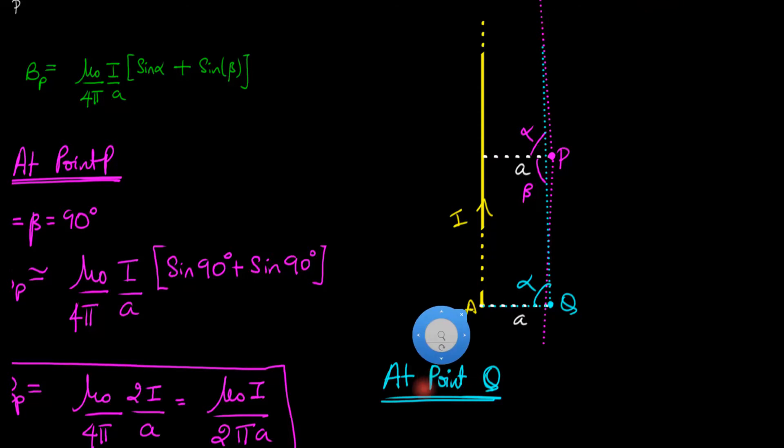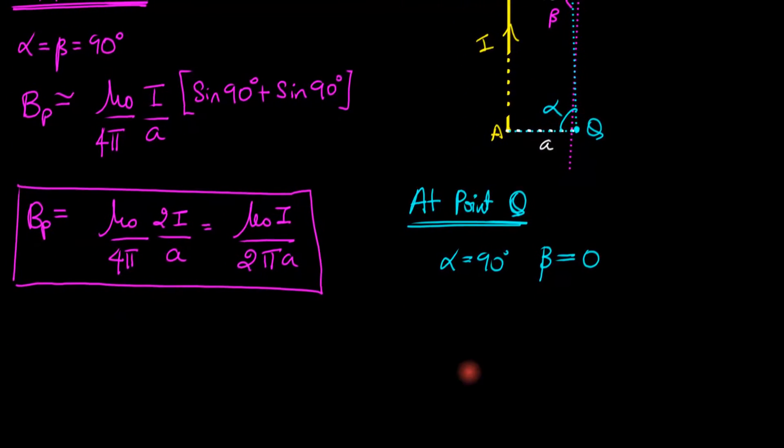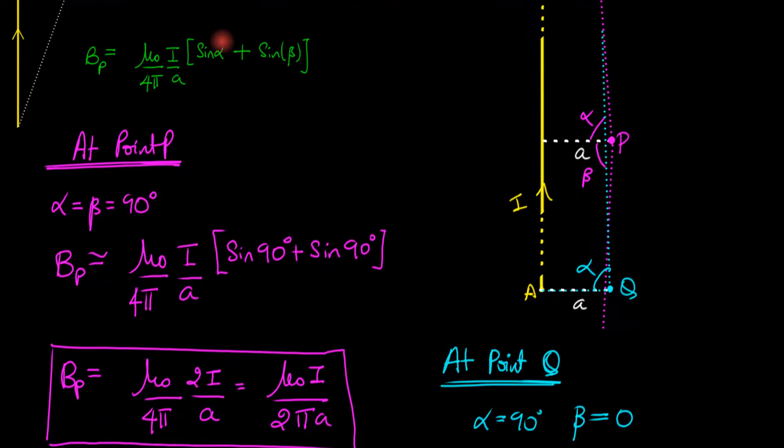So that immediately tells us that alpha is 90 degrees and beta is 0. And if you substitute these into the same equation, you get a 90 here and a 0 here.